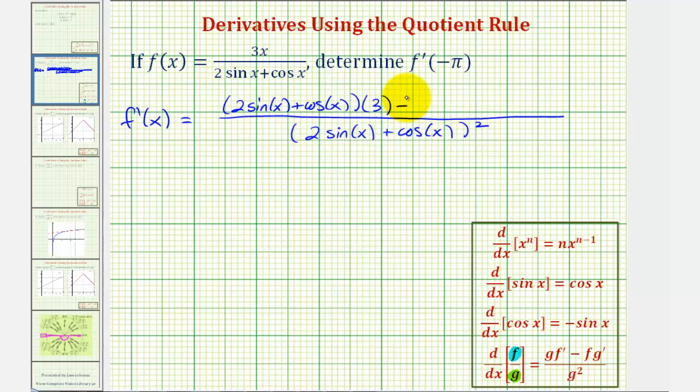Then we have minus f, which is three x, times the derivative of g, which would be the derivative of two sine x plus cosine x. The derivative of two sine x would be two times cosine x, and the derivative of cosine x is negative sine x, so we have minus sine x.